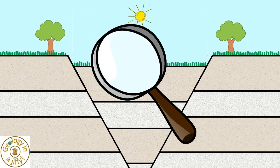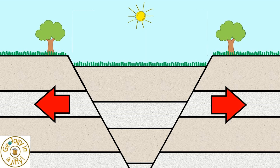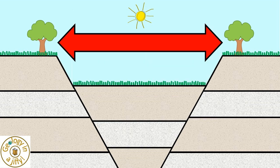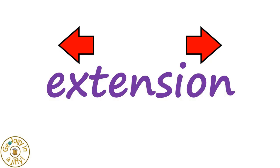Wow! If we measure the width of the graben before extension happens and afterwards too, we see that the width of the valley has increased, proving that the area has undergone extension.